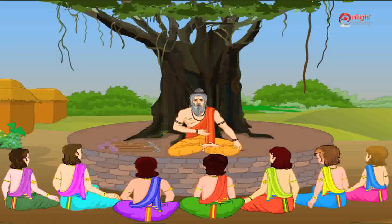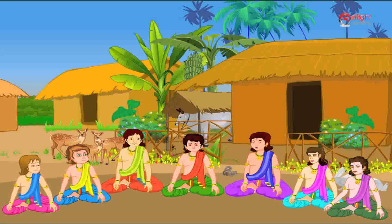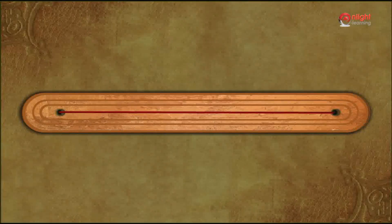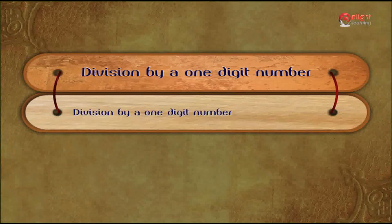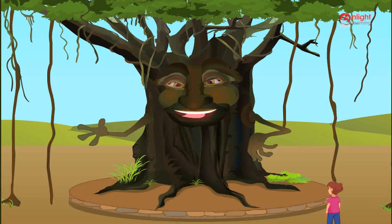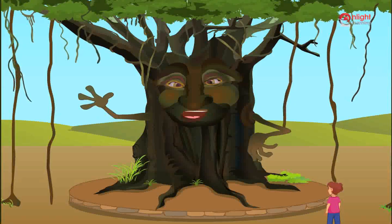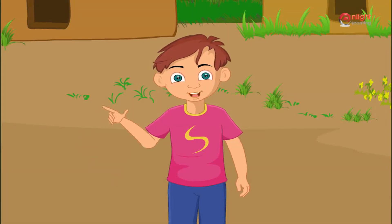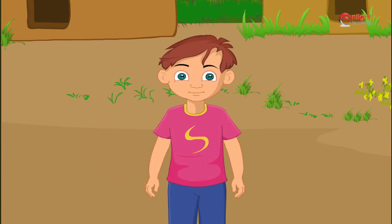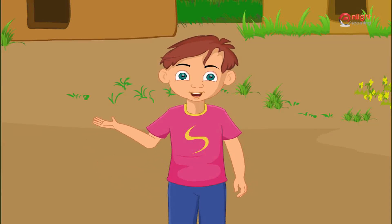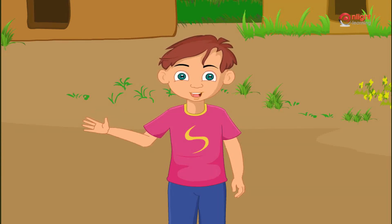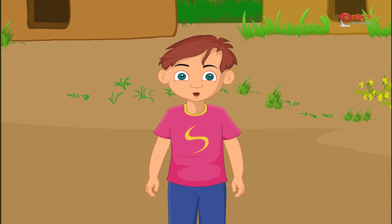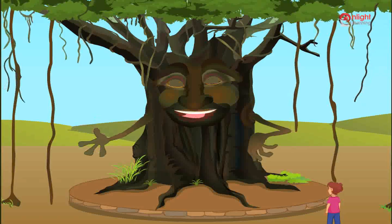Is everybody clear with the concept? Yes, Guruji. In this lesson the princess learnt division by a one digit number. Rahul, I hope you understood how to divide by a one digit number. Yes, I did. Now I can find the number of students in each group. But I do not know the total number of students from class 4 to class 10th. I shall find out at school tomorrow and let you know. Good night, Rahul. Good night. Thank you.